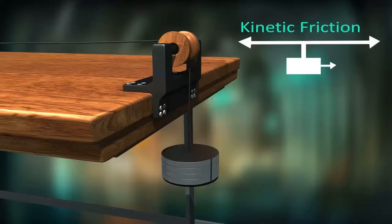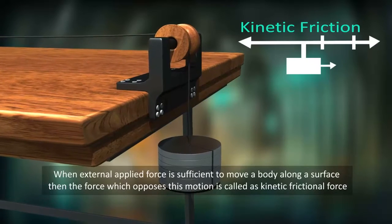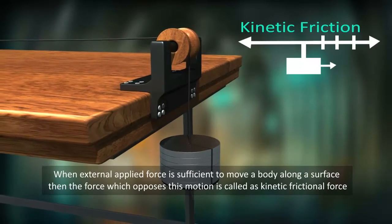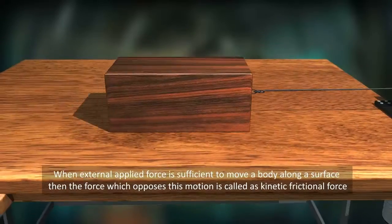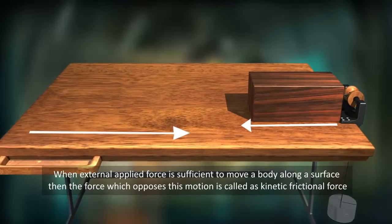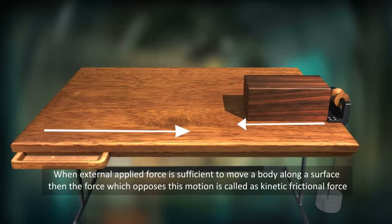Kinetic friction comes into play when a body just starts moving along a surface. When external applied force is sufficient to move a body along a surface, then the force that opposes this motion is called kinetic frictional force.